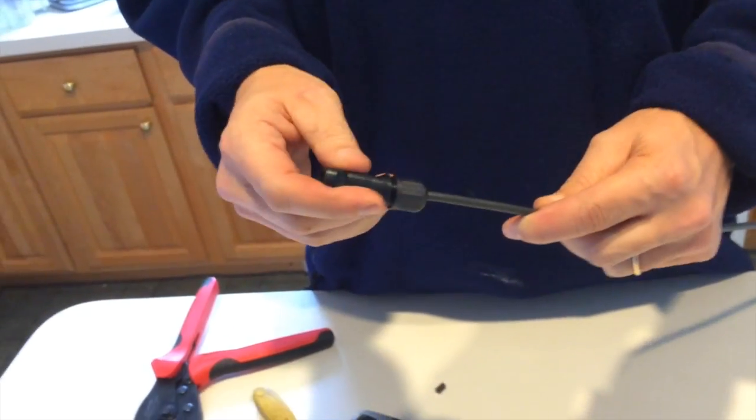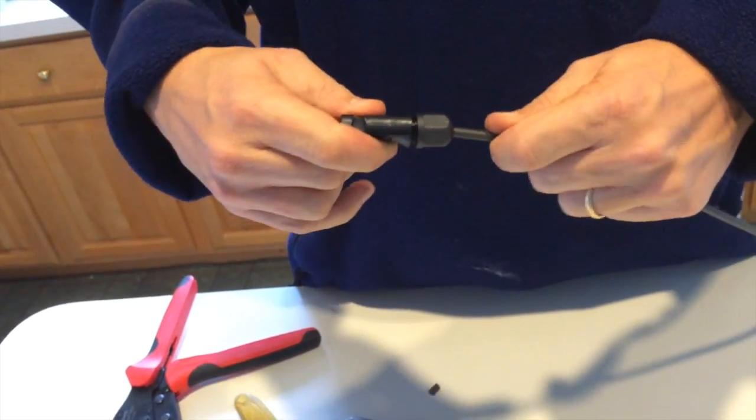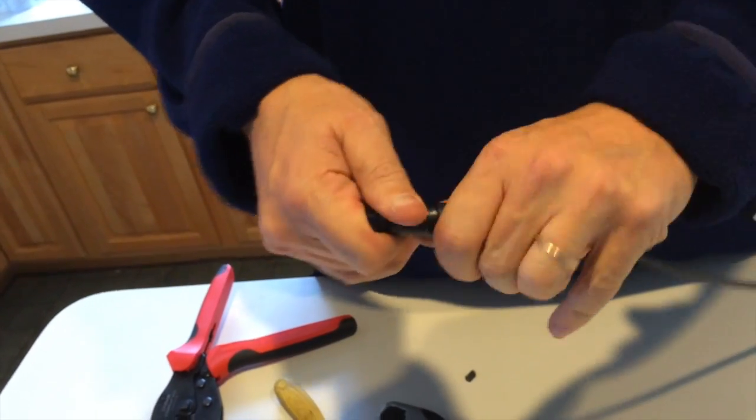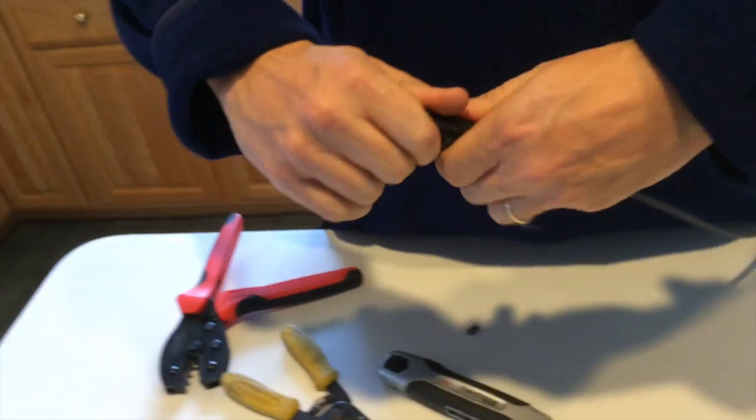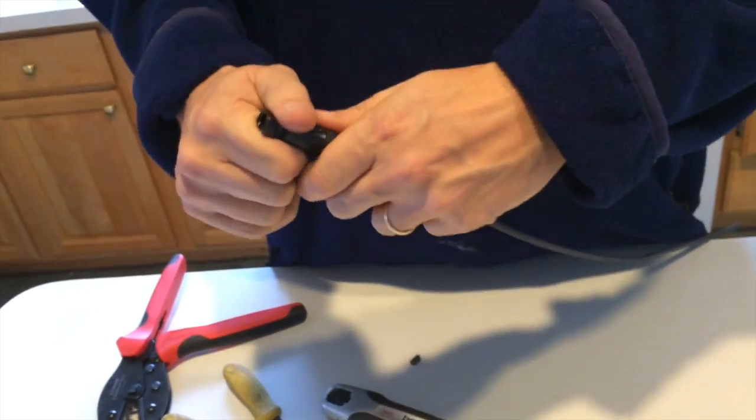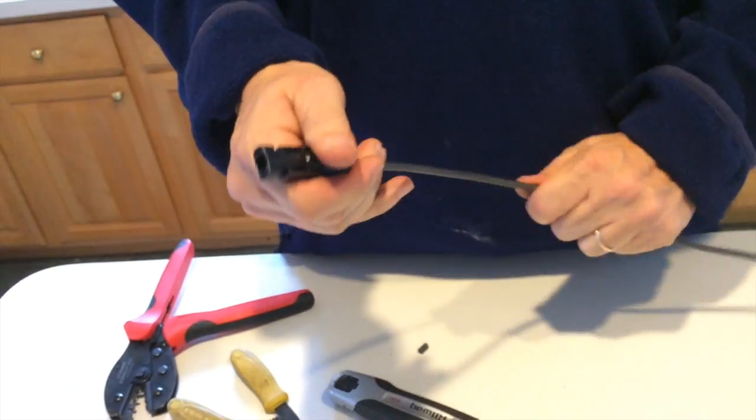Here's the male connector. We push this in here and listen for the click. Sometimes a click is more audible than other times. If you pull it back out though, it should be nicely tight. And then we do in the strain relief. Again, not using any tools if your hands are strong enough. Otherwise you could use some sort of wrench there. And that's it.